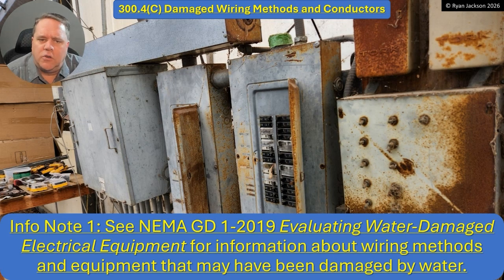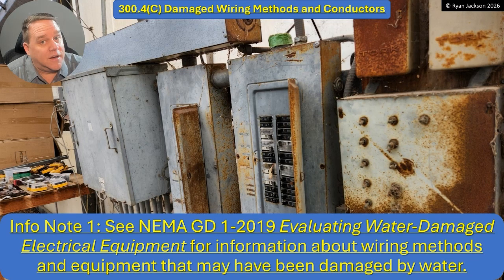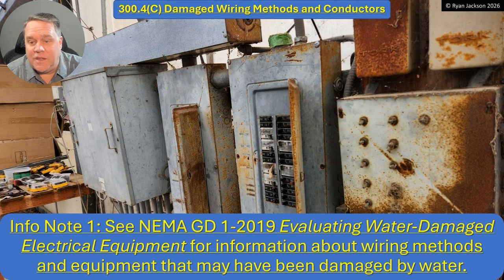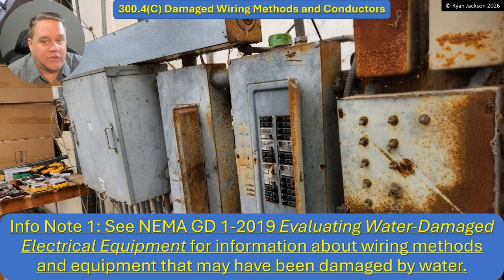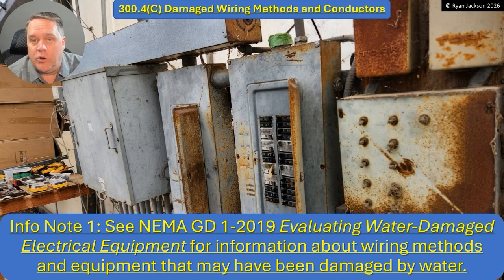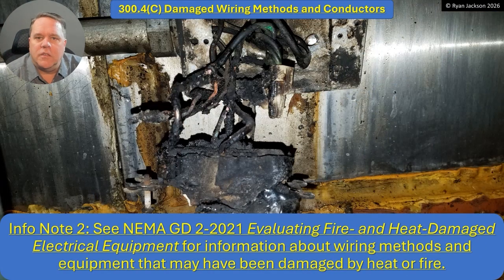Looking at this picture here, we've got an indoor plant growing operation — just flowers and such — and you can see they used regular old indoor equipment. Eventually that equipment is going to look like this and then even worse. At what point does it need to be replaced? Somebody's got to make that call — ultimately the AHJ, although hopefully the owner will pull the trigger before the AHJ even gets involved.